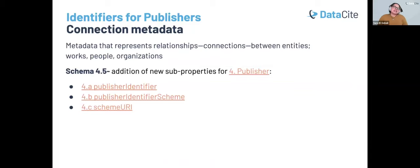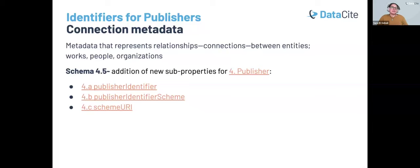If you're familiar with the DataCite schema, you may have already encountered connection metadata. We support connection metadata to associate DOIs with related works, people, or organizations. The key feature here is the capacity to create connections between other persistent identifiers — essentially creating a network of interconnected research. In schema 4.5, the publisher property has been updated to support identifiers for publishers, so repositories can now choose to specify a publisher identifier to unambiguously identify the publisher of a resource.